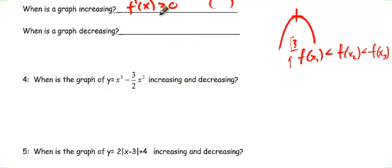When's the graph increasing? When the derivative is greater than 0. When the graph is decreasing is when the derivative is less than 0. If it's positive, it's increasing. If it's negative, it's decreasing.